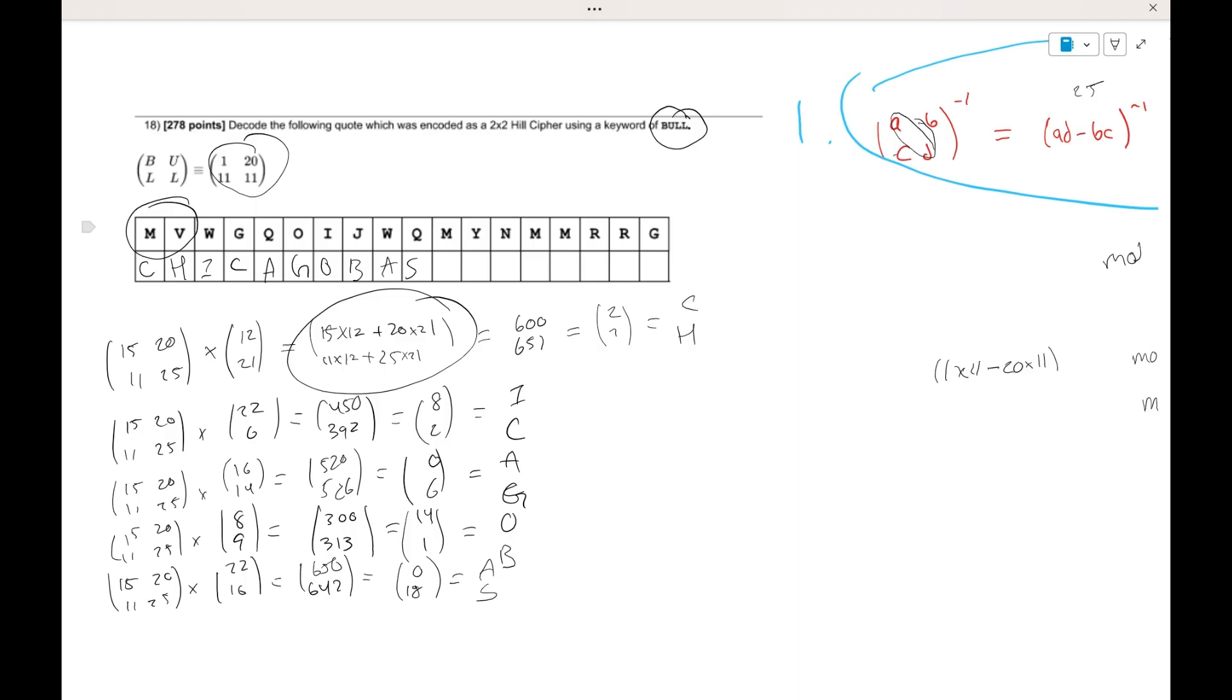Next, we have M and Y. So if we do the same thing, M and Y is equal to 12 and 24. If we multiply that, you end up getting 660 and 732, which is equal to 10 and 4 in mod 26, which ends up being K and E. Then we have N and M, which ends up being 13 and 12. If we multiply that, you're going to get 435 over 443. Mod 26, you get 19 and 1, which is T and B.